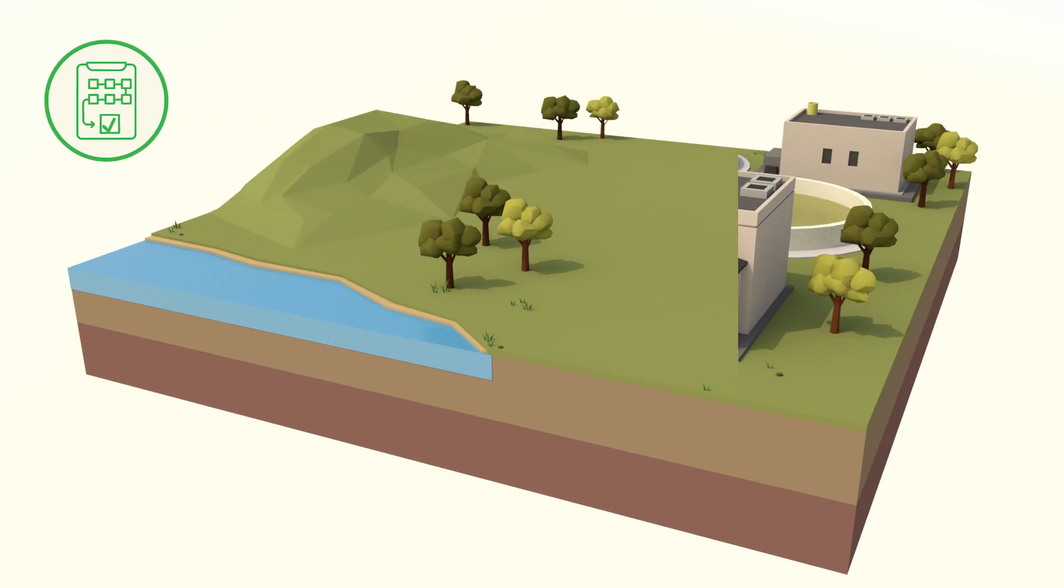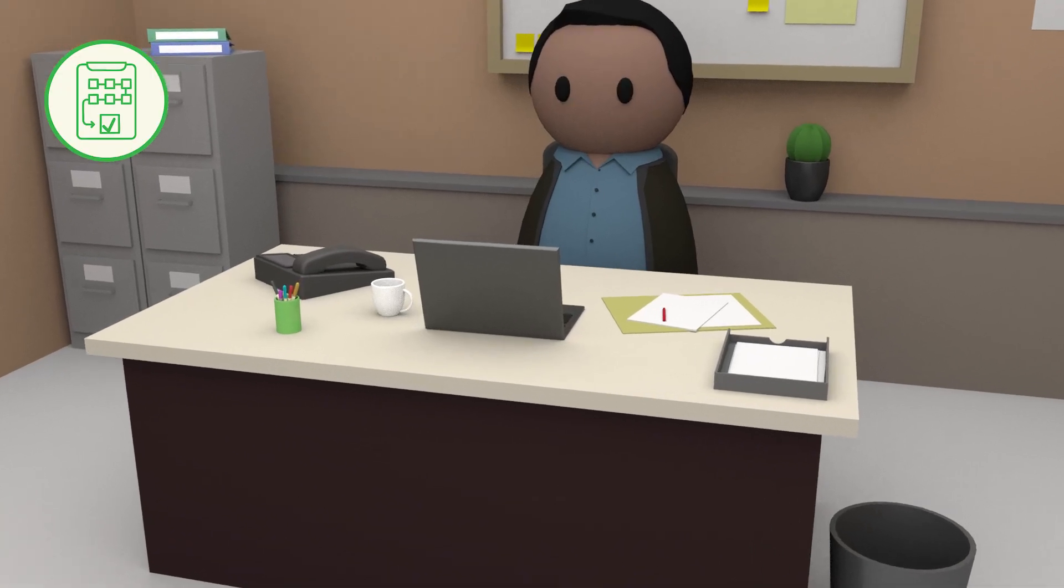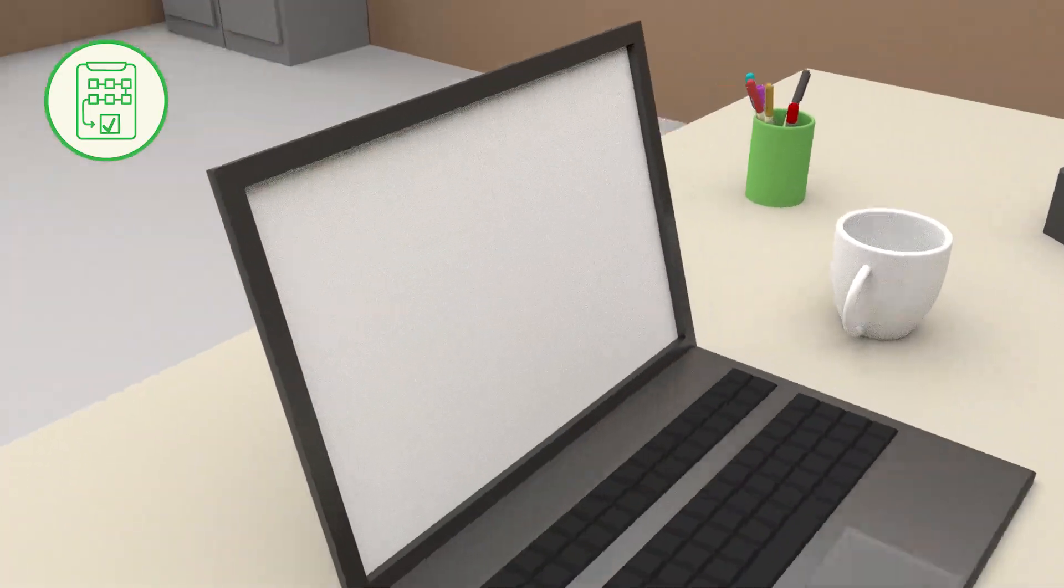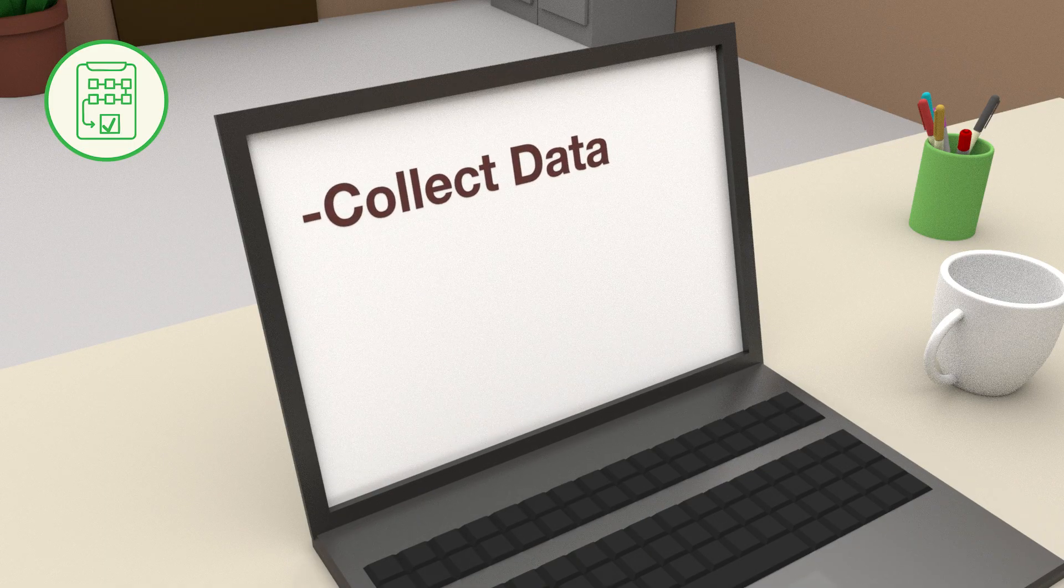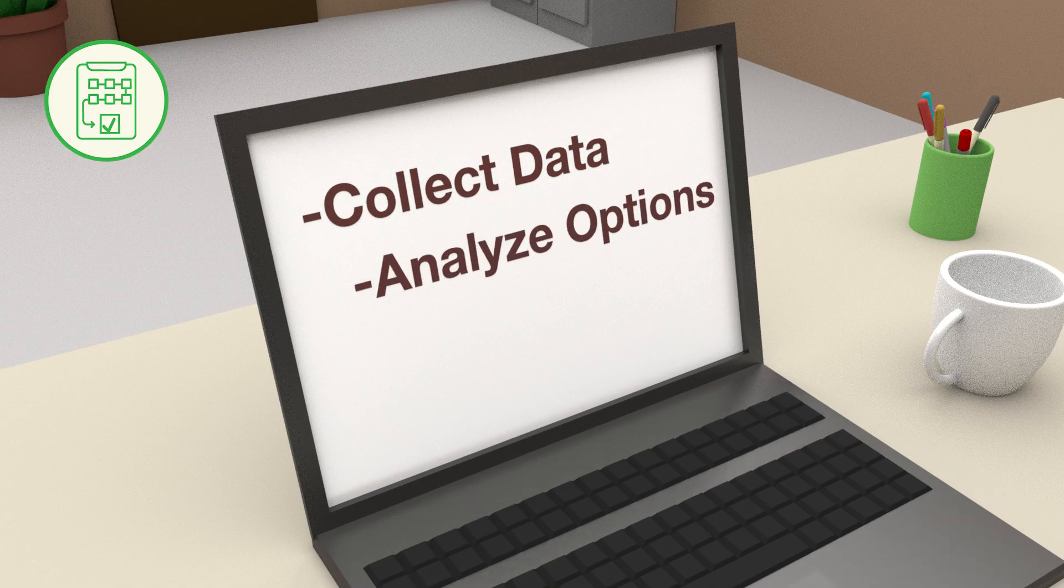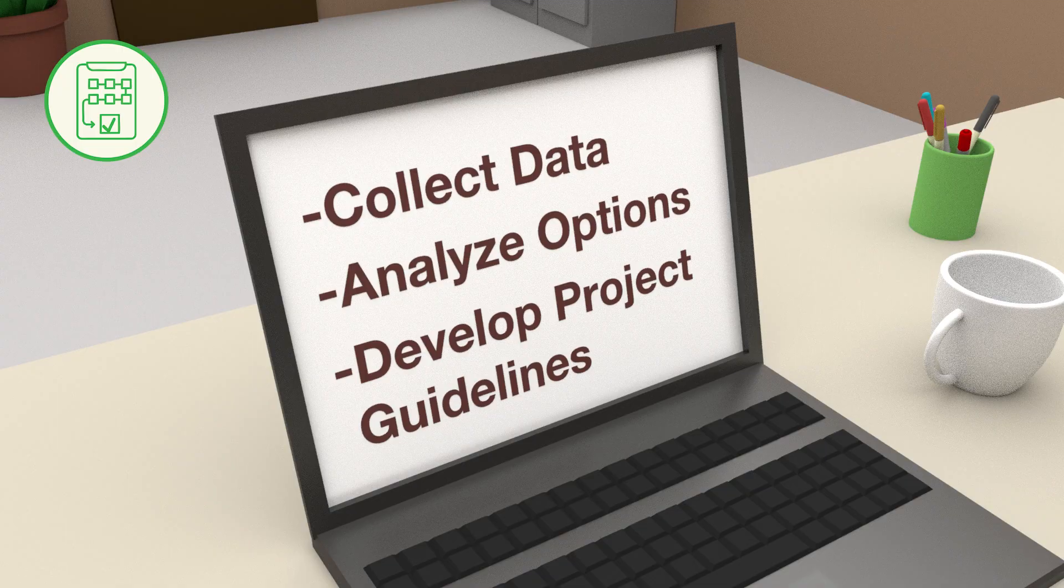The first step is planning. Let's say a town needs a wastewater treatment facility. A plan is needed to identify needs and to outline project details. Planning costs include staff time for collecting data, analyzing options, and developing project guidelines.